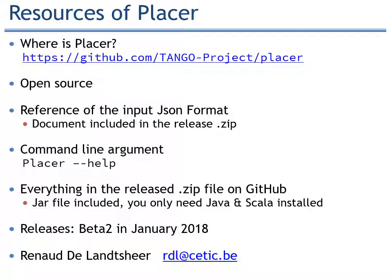If you want to know more about Placer, it is on GitHub as open source, in the Tango project repository. The release file is a large zip file you will find on GitHub as well. It includes a lot of documentation — a reference for the input JSON format, which is quite detailed, and command line argument help available by calling Placer with the help parameter. Everything you need to use Placer is included in the zip file. We are proud to have made the Beta 2 release in January 2018. Feel free to contact me at the email address shown below.